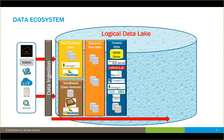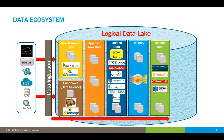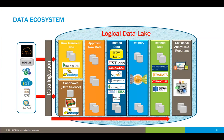Moving from left to right in this data ecosystem diagram, we're building higher levels of quality and trust in data so we can actually utilize it. After raw transient data stores, we have approved raw data, then trusted data stores — which can be on virtually any platform, including master data management stores, relational databases, or NoSQL databases. Ultimately, we refine that information for decision-making using ETL, getting to refined data stored in data warehouses and data lakes, both on-premise and cloud, driving self-serve analytics and reporting. The trusted data source center also supports normal operating procedures and transactional data.